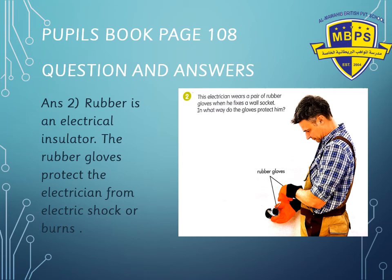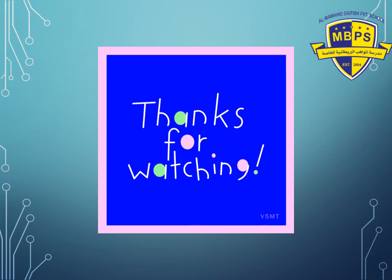I hope you understood this topic well — conductors, insulators, and electrical safety. Please finish your homework, worksheet number 8. It's about a boy doing something with an electrical appliance — tell me what he's doing wrong and what he should not do. Thanks for watching, have a great day, and see you tomorrow!